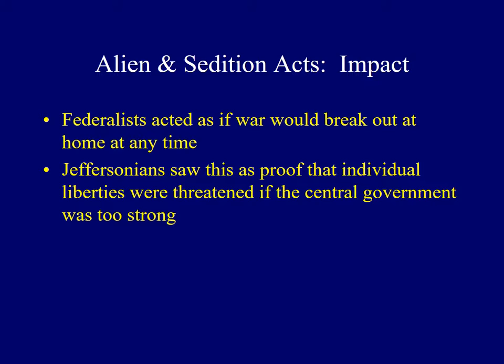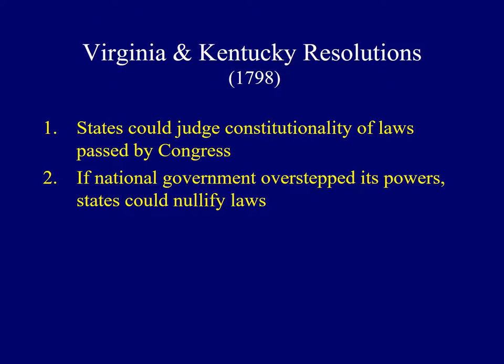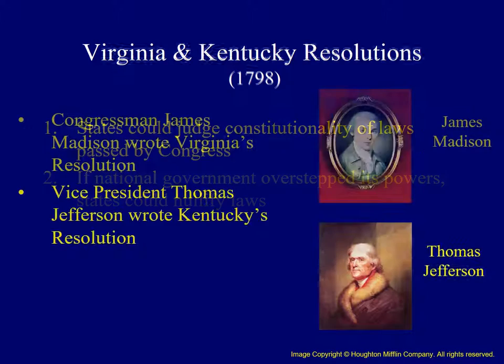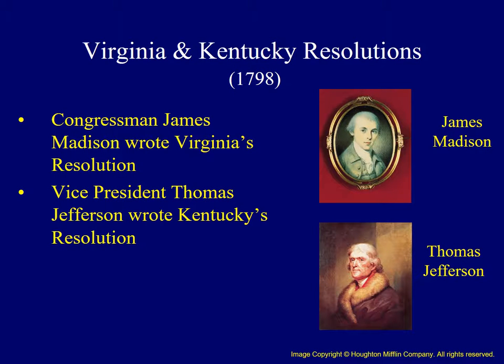Federalists acted as if war at home was imminent. Jeffersonians were infuriated, and for many, fears of a strong central government attacking civil liberties seemed to be coming true. State legislatures in Virginia and Kentucky responded by passing the Virginia and Kentucky Resolutions, arguing that states had the right to judge the constitutionality of laws passed by Congress, and that if the national government exceeded its powers, states had the right to nullify such laws. Initially the authors were unclear, as they feared prosecution under the Sedition Act. We now know they were written by James Madison and Vice President Thomas Jefferson—meaning President Adams signed these bills into law while his own Vice President authored a major attack upon them.